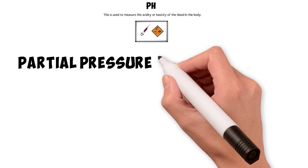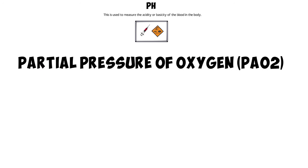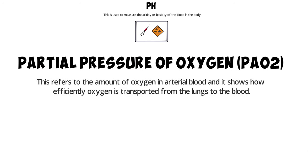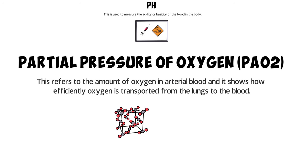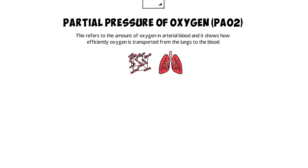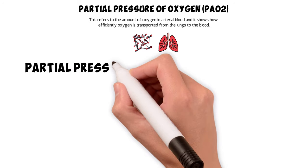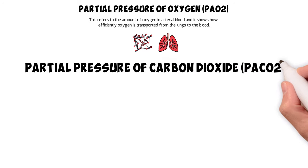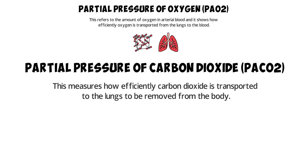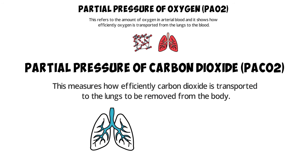Next, there is partial pressure of oxygen, or PaO2. This refers to the amount of oxygen in arterial blood and it shows how efficiently oxygen is transported from the lungs to the blood. Then, there is the partial pressure of carbon dioxide, or PaCO2. This measures how efficiently carbon dioxide is transported to the lungs to be removed from the body.